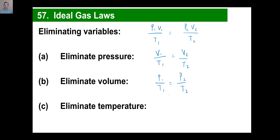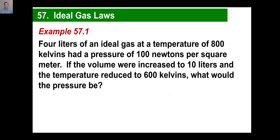All right, let's try one. Look how complicated this problem looks — don't be intimidated. 4 liters of an ideal gas at a temperature of 800 kelvins at a pressure of 100 newtons per square meter. If the volume were increased to 10 liters and the temperature reduced to 600 kelvins, what would the pressure be? Easy thing to do: anytime you see these problems, don't even think — just write the equation.